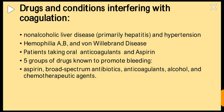Drugs and conditions interfering with coagulation include: non-alcoholic liver disease (primarily hepatitis), hypertension, hemophilia A, B, and von Willebrand disease, patients taking oral anticoagulants like warfarin and aspirin. Five groups of drugs are known to promote bleeding: aspirin, broad-spectrum antibiotics, anticoagulants, alcohol, and chemotherapeutic agents.